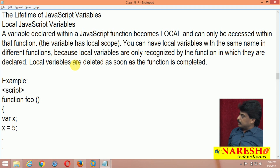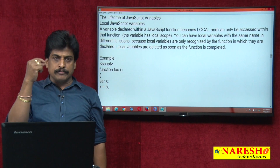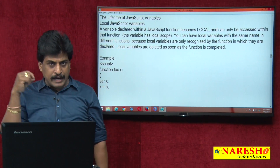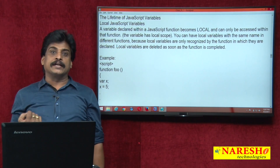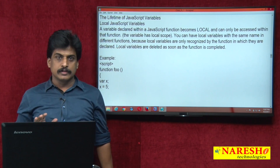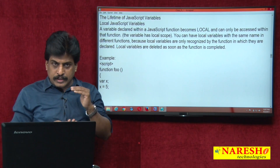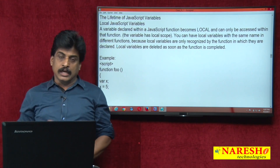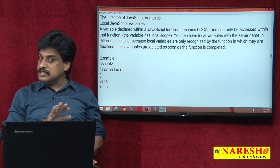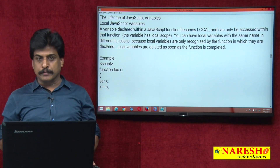You can have local variables with the same name in different functions — for example, function1, function2, function3. If I declare variable A in one function and variable A again in another function, no issue. Once you declare a variable within a function, its scope is always local. Within the function, must not be duplicate; outside of it, you can duplicate any number of times.